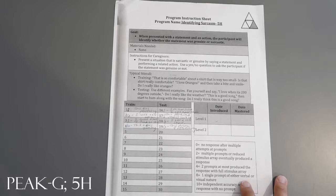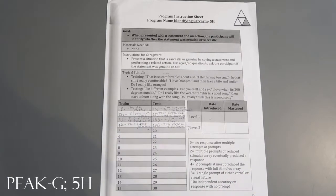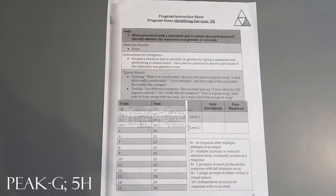This is the program sheet for Peak Generalization Identifying Sarcasm 5H. I'm going to go over the materials we used for this program. You could obviously use anything to contrive some sort of either genuine comment or sarcastic comment or statement.